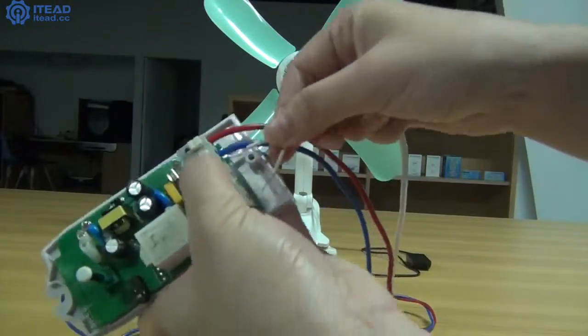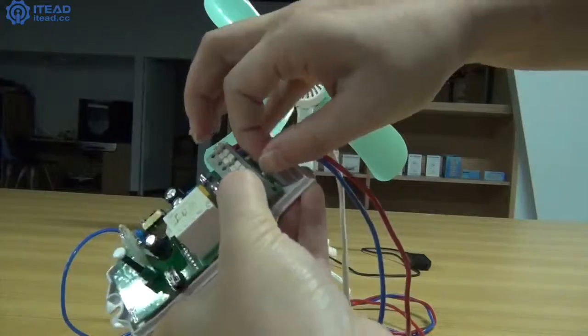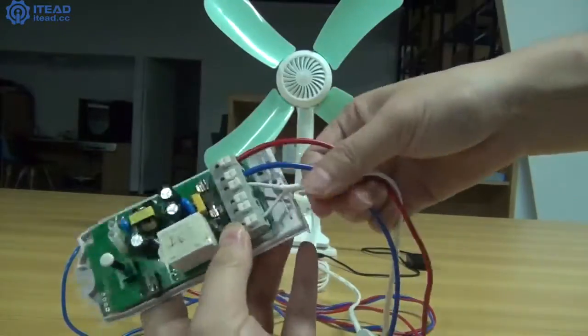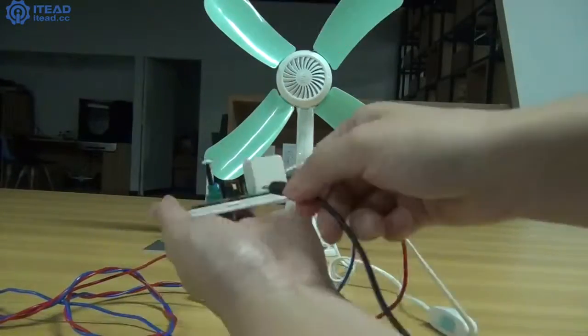Second, in the same way, respectively connect the live, neutral or earth if any wire of the fan to Sonoff TH. Plug Sonoff sensor into Sonoff TH.